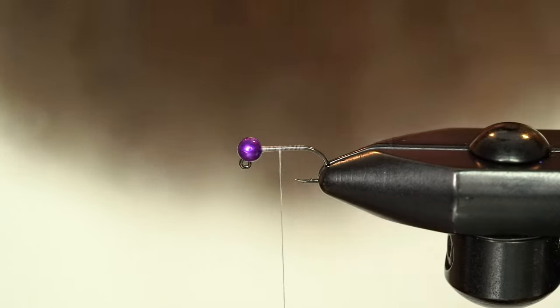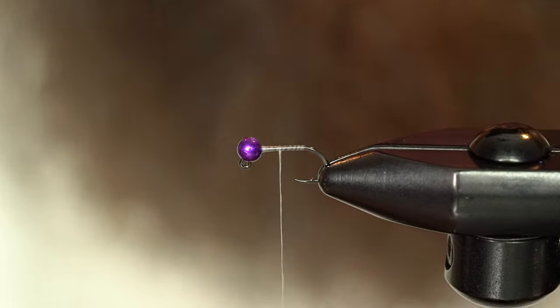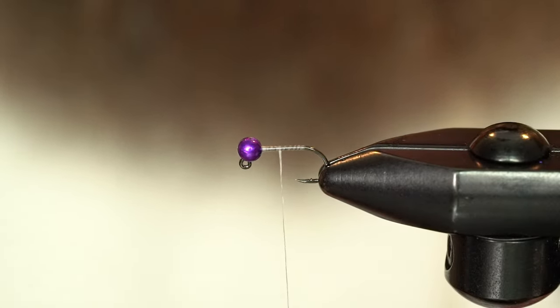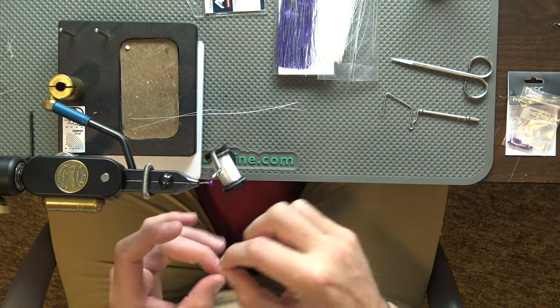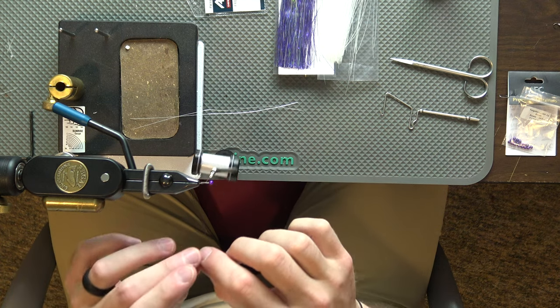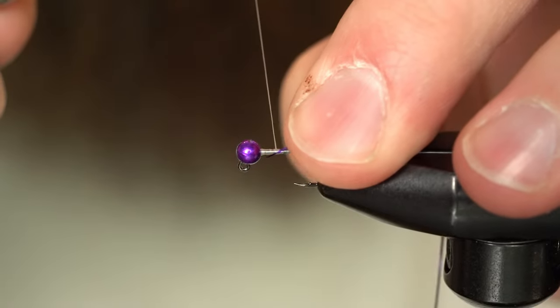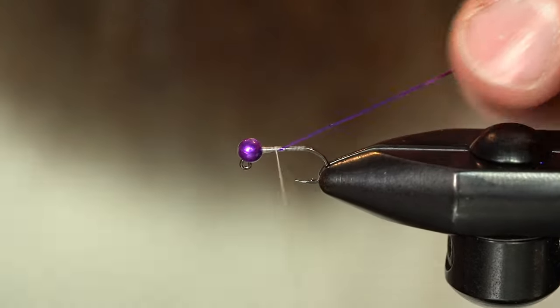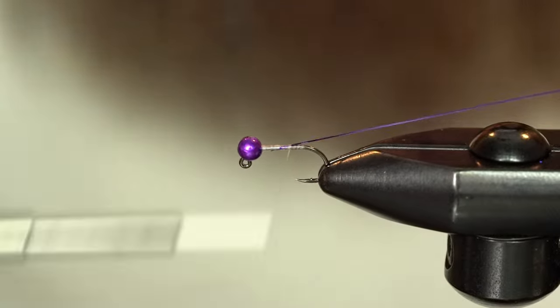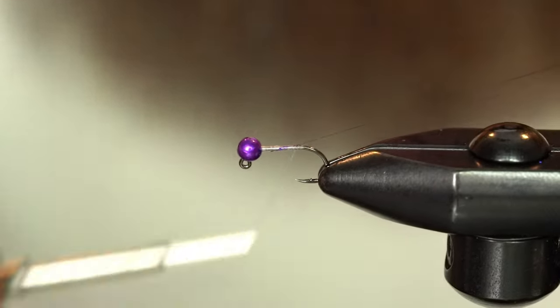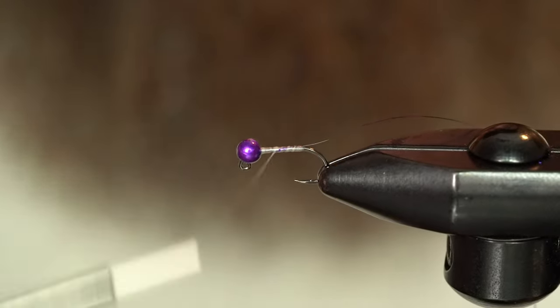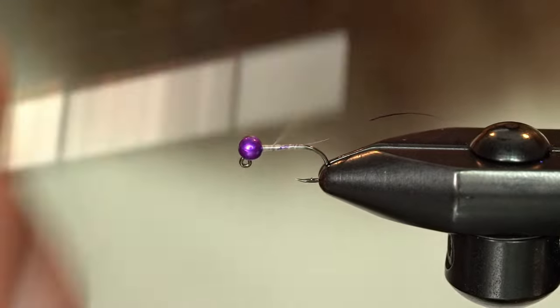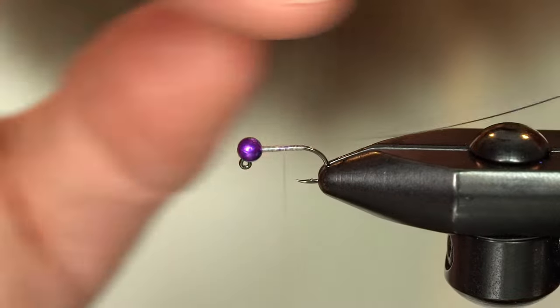So for my rib, I've got some Flashaboo in purple. Tie that in. And I'm going to work it all the way back to my end of thread wraps. Create a little bit of a taper. Flatten my thread out again. Stash this in my material clip.